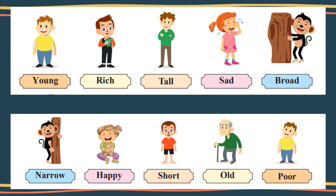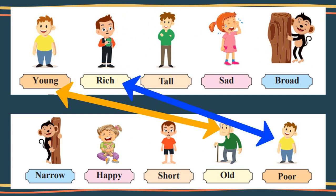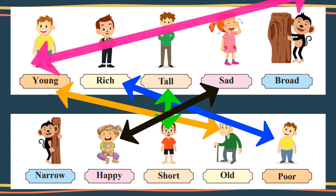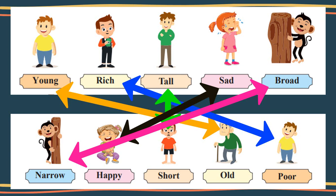See narrow, happy, short, old, poor. Now what to do? You just make pairs of opposite words or antonyms. So now see, match the pairs. Young, old. Rich, so opposite word of rich is poor. Tall, so short. Then sad, opposite word of sad is happy. Broad means wide, and opposite word of broad is narrow.